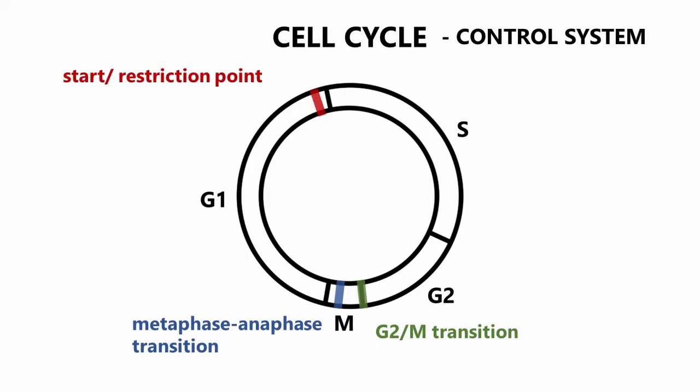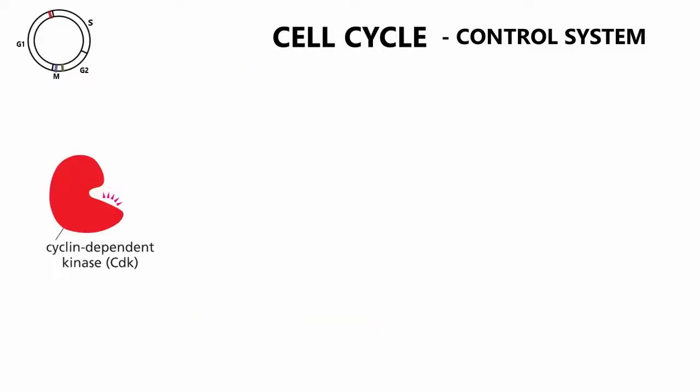If a problem inside or outside the cell is detected, the control system normally blocks the progression.